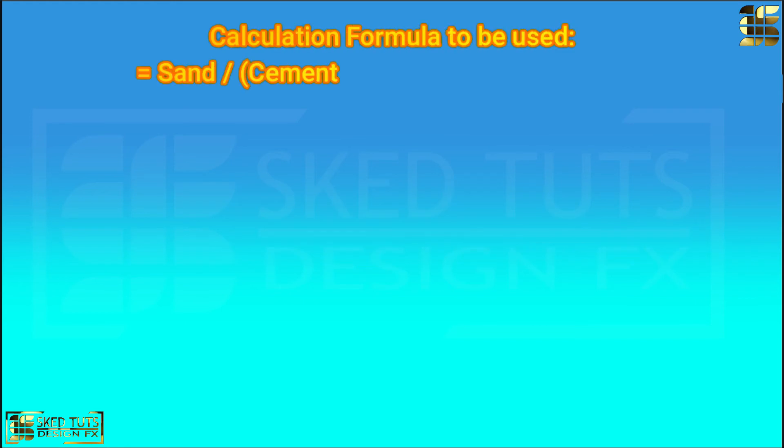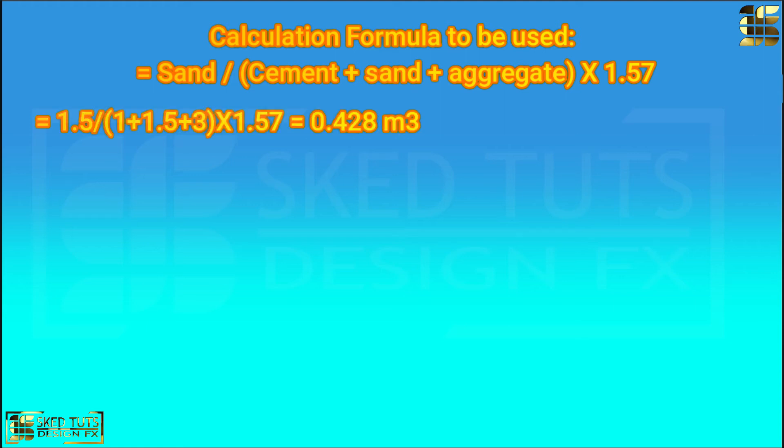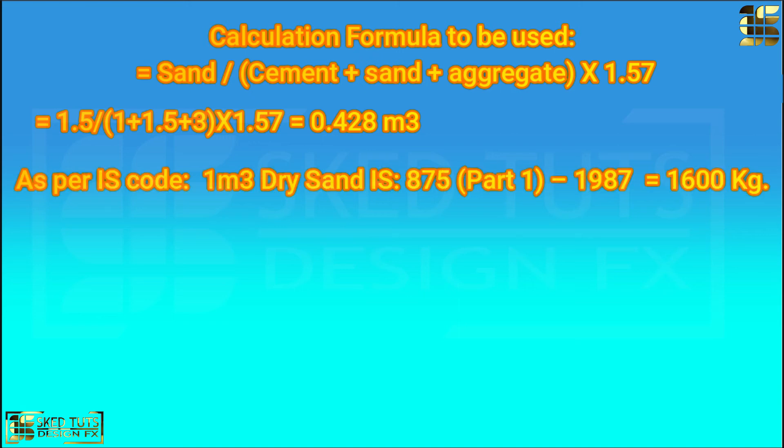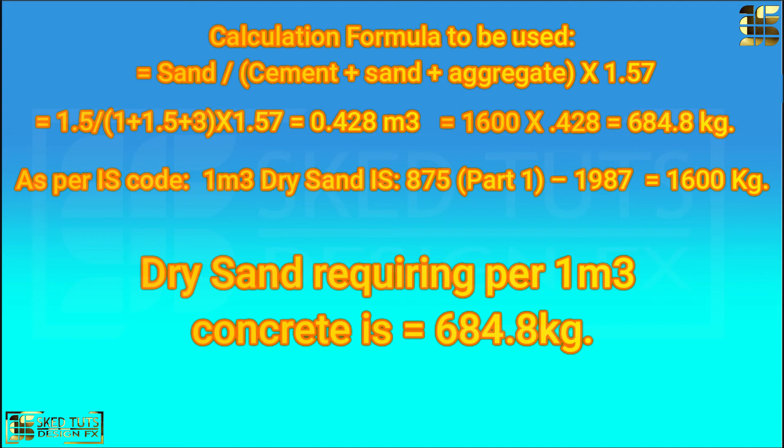Calculation formula to be used: Sand divided by cement plus sand plus aggregate into 1.57. So 1.5 divided by 1 plus 1.5 plus 3 into 1.57 is equal to 0.428 cubic meter. As per IS code IS 875 part 1.1987, 1 cubic meter dry sand weight is 1600 kg. So 1600 into 0.428 is equal to 684.8 kg.